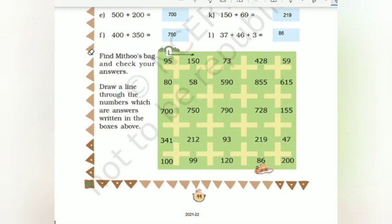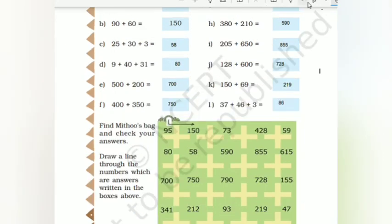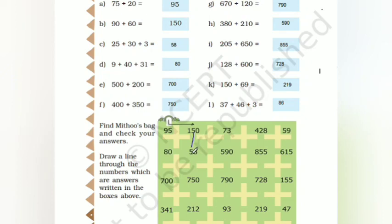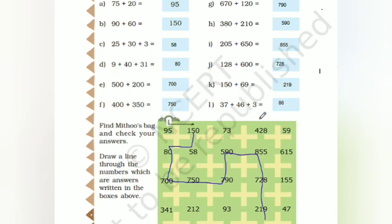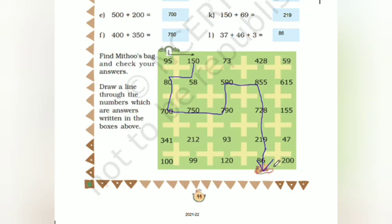219 and 86. Find Mithu's bag and check your answers. Draw a line through the numbers which are the answers written in the above box. Our answers are: 95, 150, 58, 80, 700, 750, 790, 590, 855, 728, 219, and 86. Draw a line through those numbers to find the hidden bag. Here is 86; that is the method to find the hidden bag.